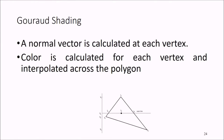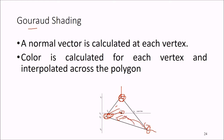Then we have Gouraud shading — this is a French name. A normal vector is calculated at each vertex, and the color is calculated for each vertex and then interpolated across the polygon. So we have color computed at each vertex and then distributed across the surface.